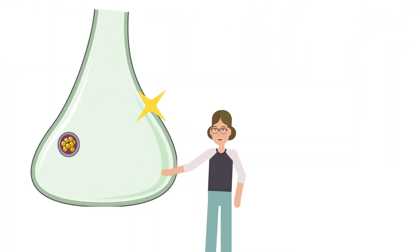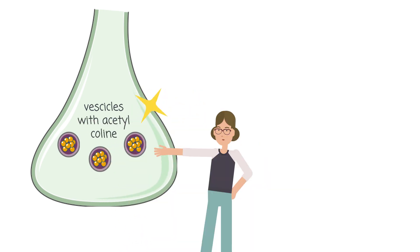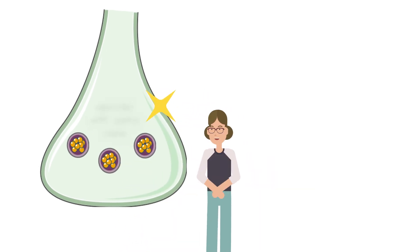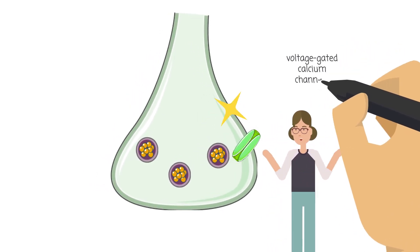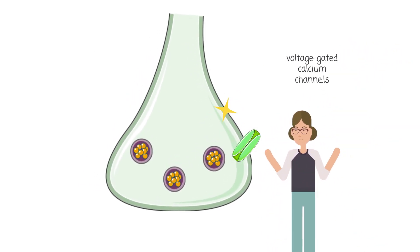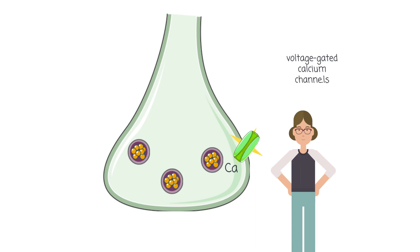We have vesicles full of neurotransmitter in the axon terminal bulbs. We also have voltage-gated calcium channels here. As soon as the action potential reaches the voltage-gated calcium channel, it opens, and calcium, due to the gradient difference, will rush into the bulb.